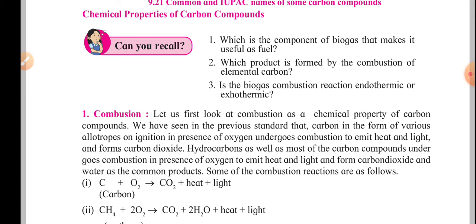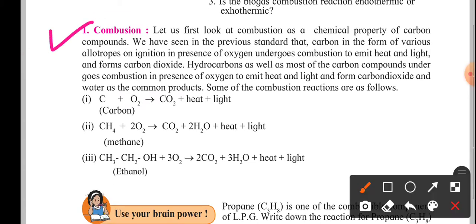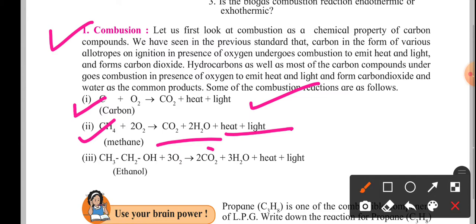Today we are going to begin with the chemical properties of carbon compounds. The first topic is combustion. Combustion is carbon reacting with oxygen, producing heat and light. Similarly, carbon compounds — hydrocarbons especially — for example, methane reacts with oxygen forming heat and light along with carbon dioxide and water.